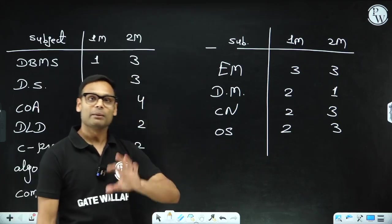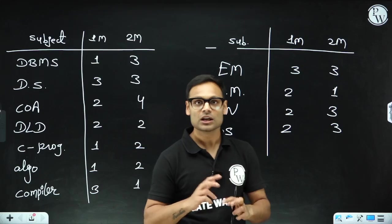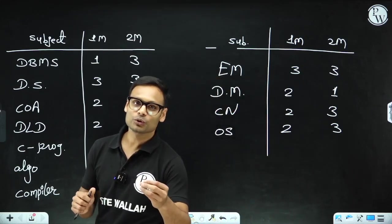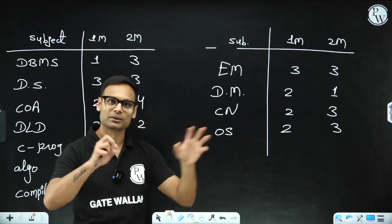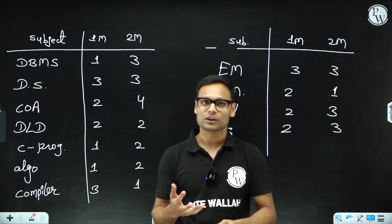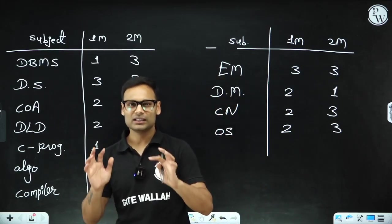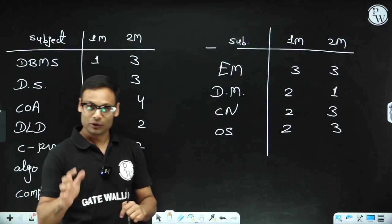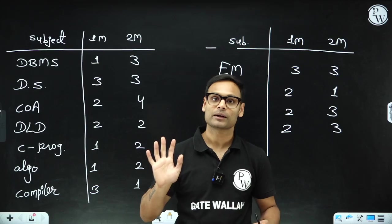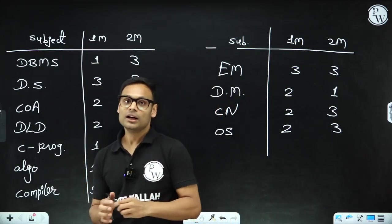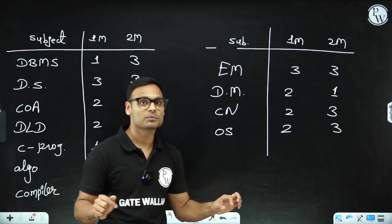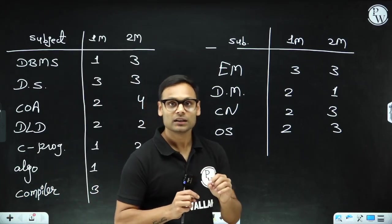Last year it was too much theory-oriented, taking extra time. Even though questions were easy, understanding the statements was very difficult. This year it was not there. Whatever questions we have received are moderate, less than moderate, even easier. You can compare this paper with the 2023 paper which was very easy. Because the number of aspirants are increasing, it's possible they have kept the level a little easier so people will be inspired to attempt the paper.